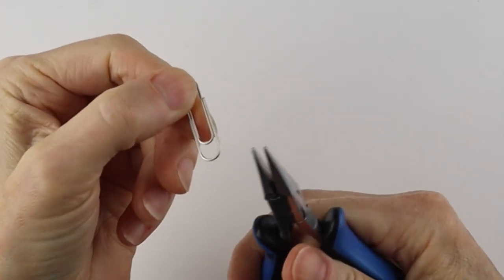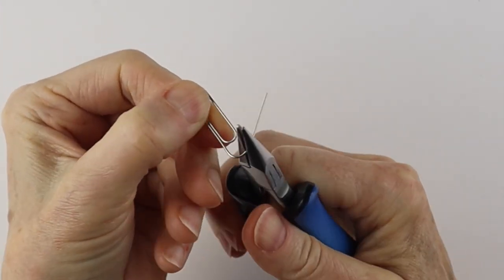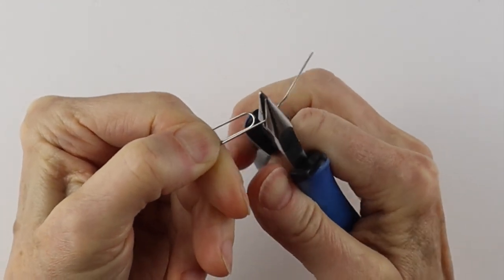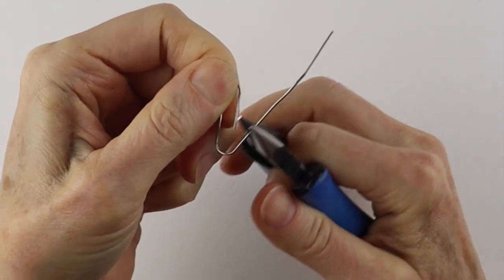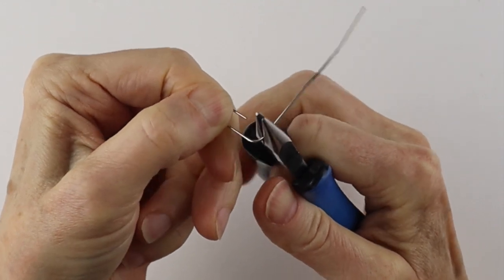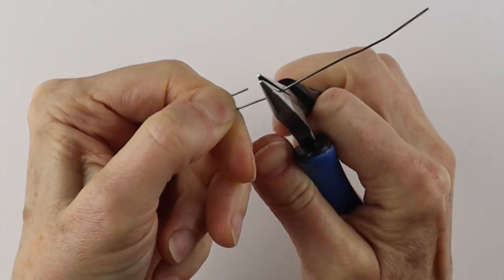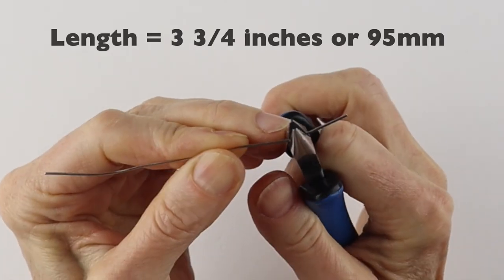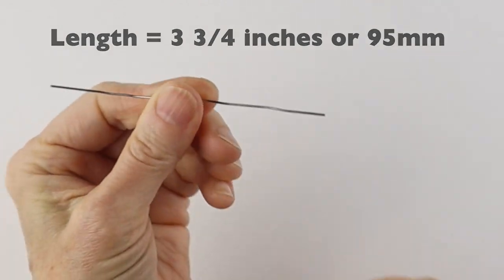We always start with opening up the paperclip with our flat pliers. You can do this by hand, but it's easier to do with the pliers. So just go slowly and pinch it along as you go. You just want to get it as straight as you can.